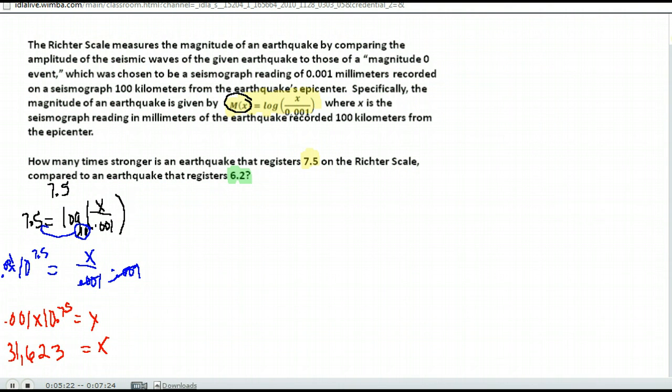Now let's go and do the same thing for our magnitude 6.2. So it came out on the Richter scale of 6.2. We need to figure out what its measure was on the seismograph so that we can compare the two values. Again, what we do here is we rewrite this in exponential form.